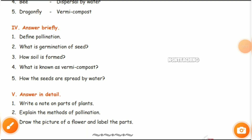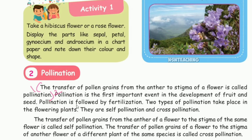Next, answer in briefly — define pollination. Page number 85. The transfer of pollen grains from the anther to the stigma of a flower is called pollination. Mark the first two lines — it is called pollination.